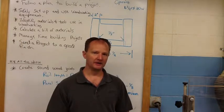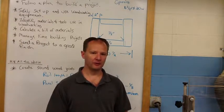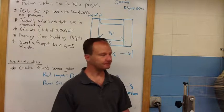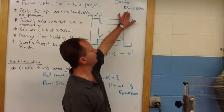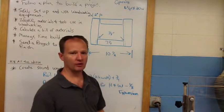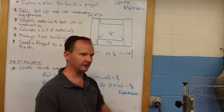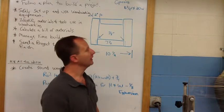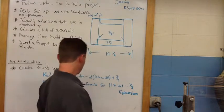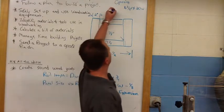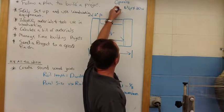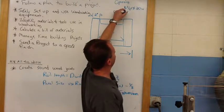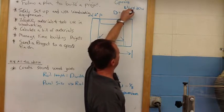We measured our opening and our opening is 16 and 3 quarters by 20 inches wide. We're going to use a half inch overlay which means that the door is going to stick over the edges half inch on all sides. That is going to give us a door size of 17 and 3 quarters by 21.